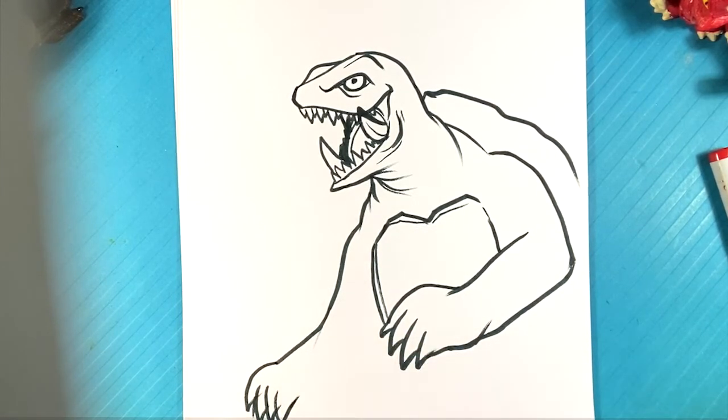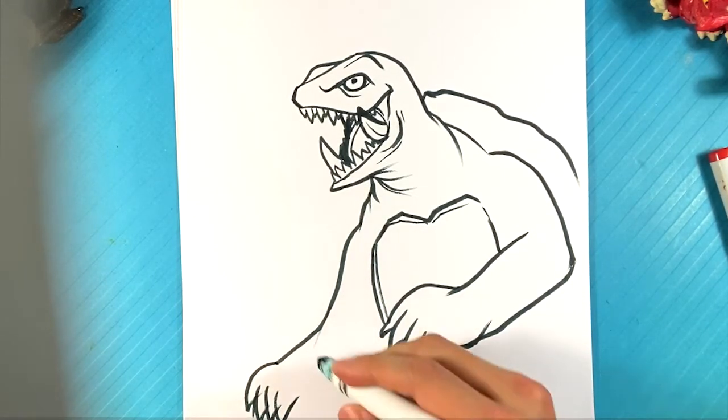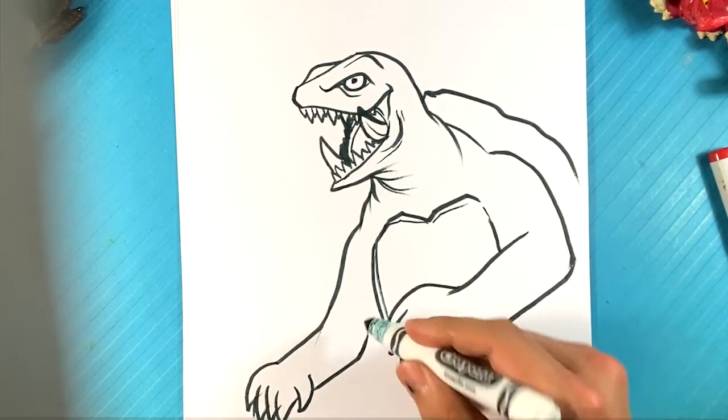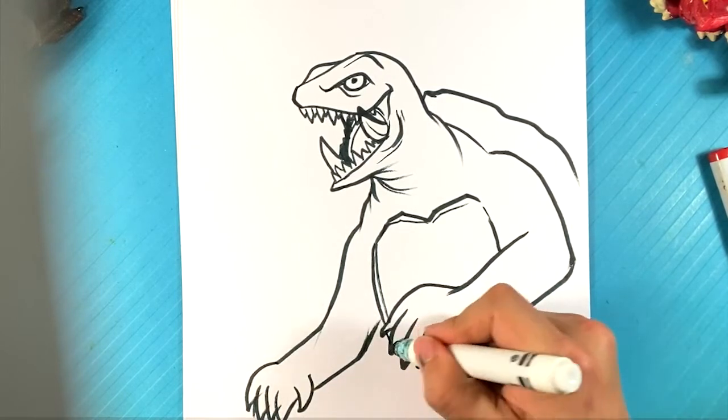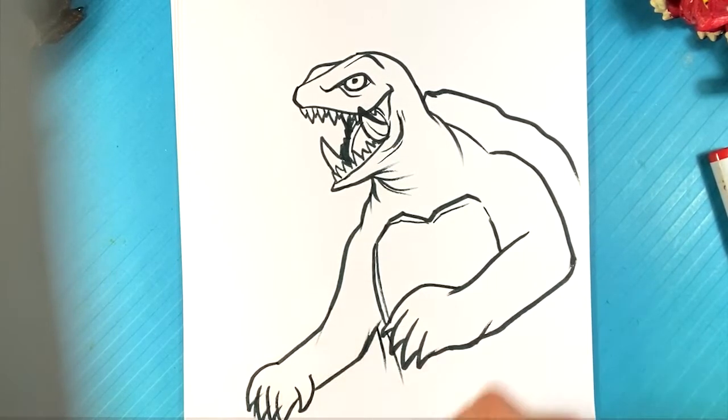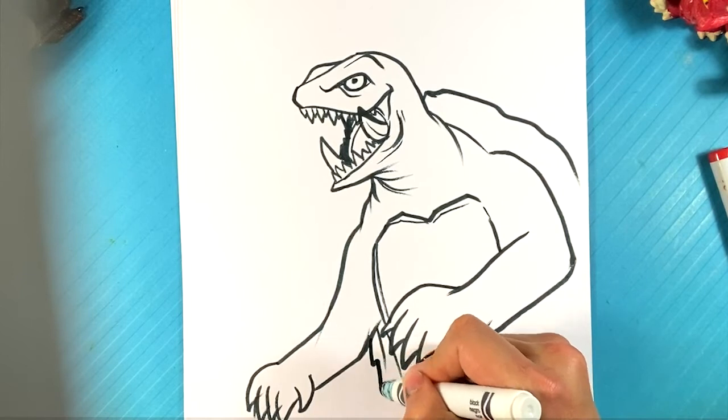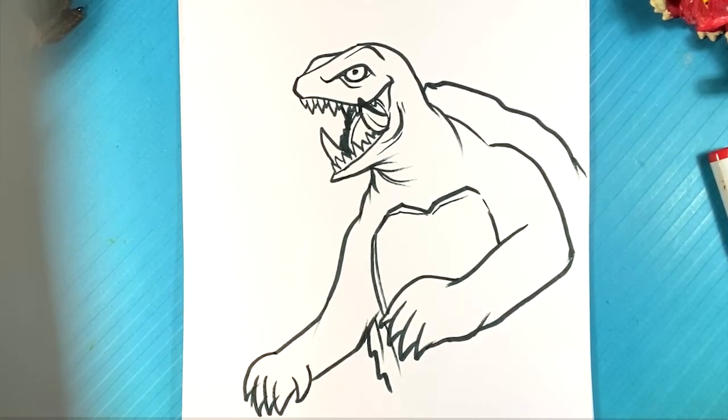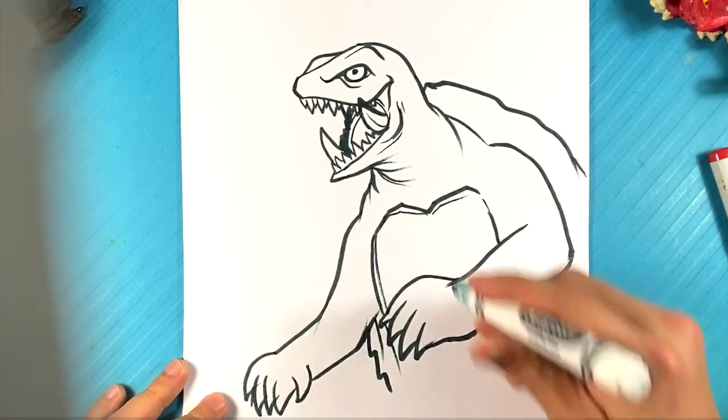He does have kind of an opposable thumb but not really, so that one's going to go this direction. I'm going to pull up here and inward. Here's the other side of the shell. Everything is pretty plain until you add some folds and details.